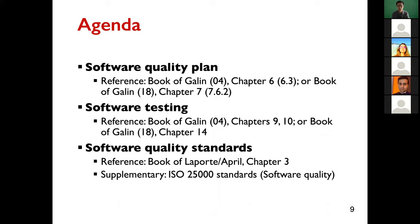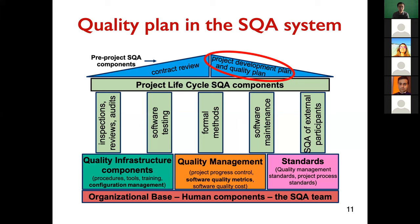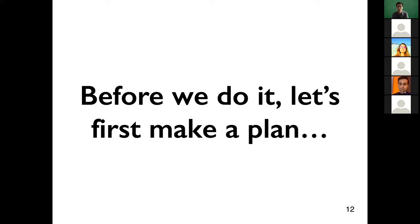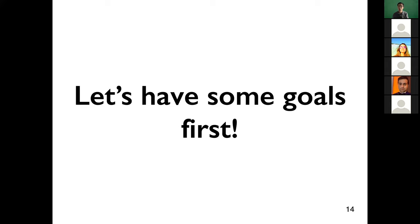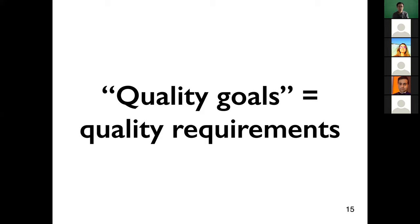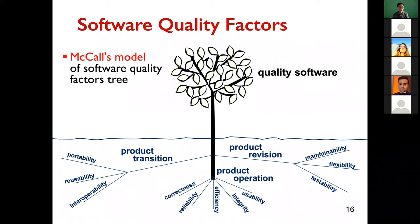First, let's look at a quality plan. This is where the quality plan sits in the SQA system — it's a pre-project SQA. Before we do quality assurance, let's make a quality plan. But where do we start to make such a plan? We should have some goals or objectives to start a plan. Our quality goals or quality objectives are the quality requirements. Specifically, we talk about the McCall's model of software quality factors. These factors are the quality requirements.